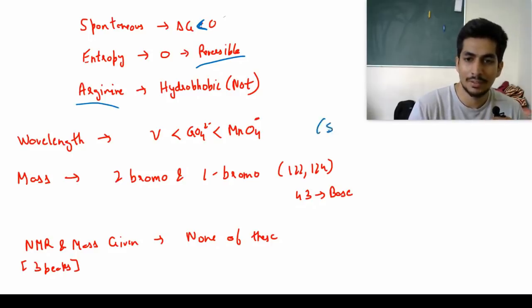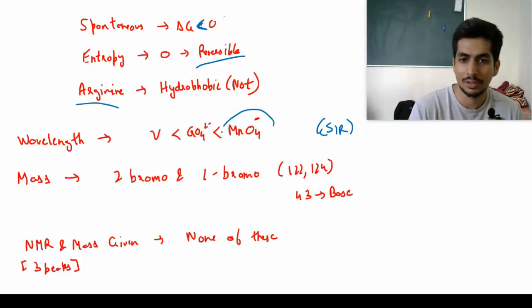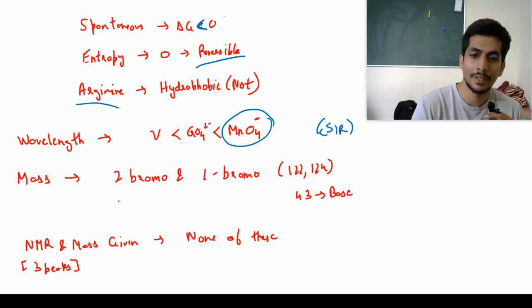Then a wavelength question - this was from CSIR NET again, I don't remember which year. Arrange them according to wavelength. Manganese in LMCT transition, this is ligand to metal charge transfer, so MnO4- will have the highest wavelength followed by chromium complex followed by vanadium.